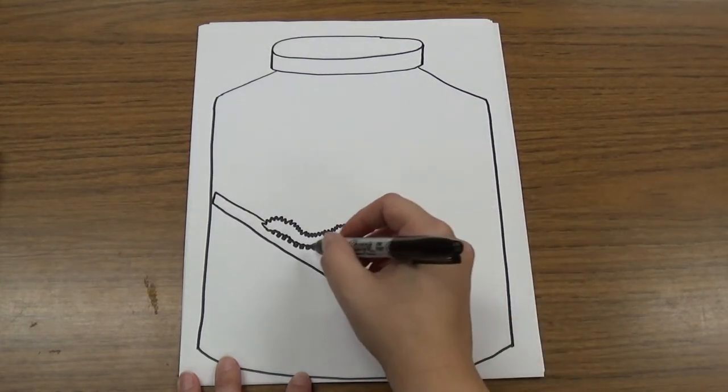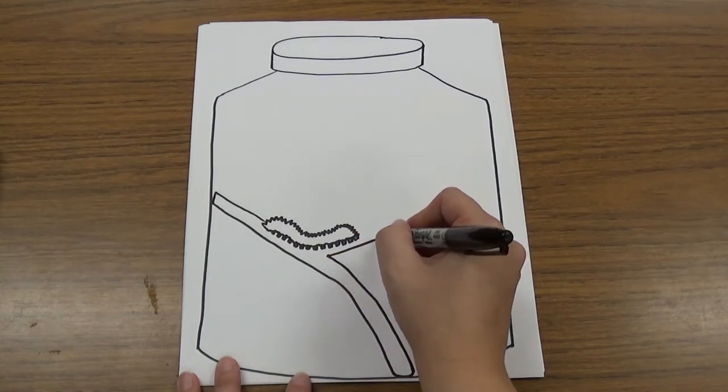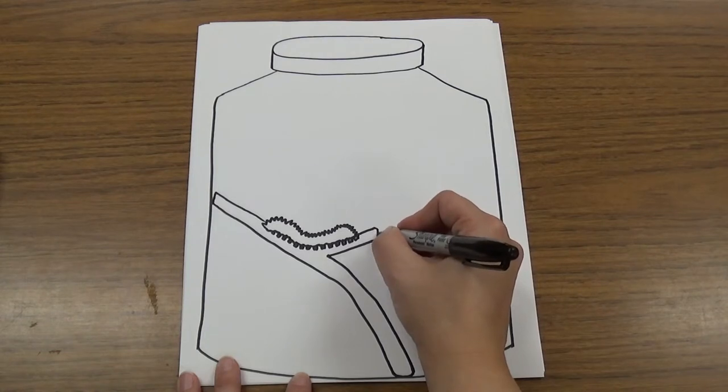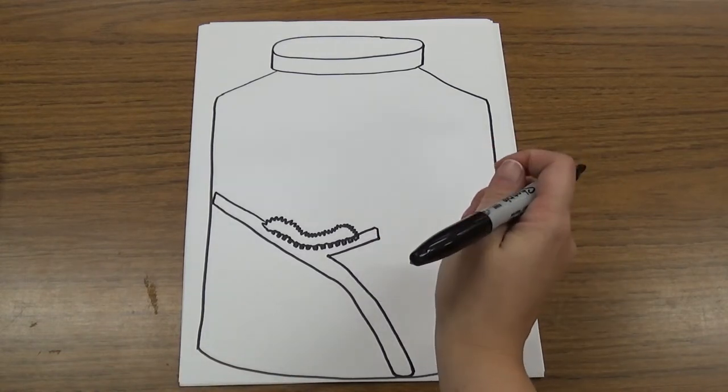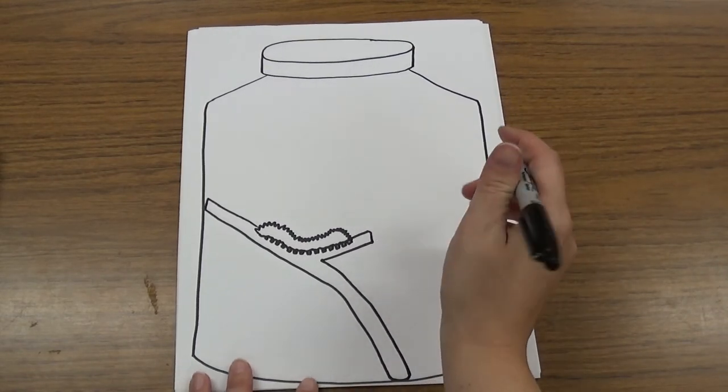I'm going to draw a nice stick, and then make a little branch coming out this way too. Again, you can do whatever you want for this. You don't have to do the same thing as me. I'm just drawing my bug in a jar, but you can draw whatever you want.